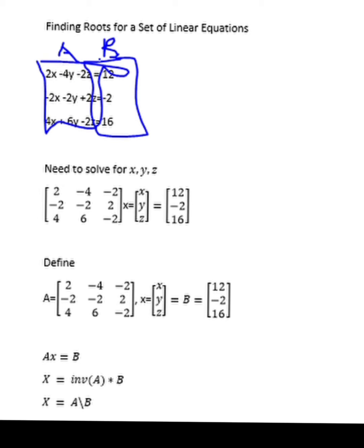To solve for the unknowns X, Y, Z, I will call that X. So if you know matrices, A times X can give us B, and the inverse of A multiplied by B will give us X. In Octave we can use this equation here: A slash B.